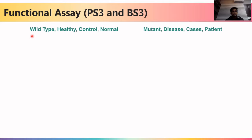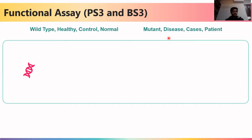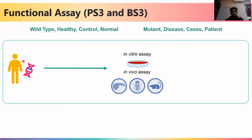Wild type, healthy, control, and normal refer to individuals who are not carriers of the variant and have not been affected by the disorder. Mutant, disease, cases, and patient refer to individuals affected by the disorder. For a gene with a variant hypothesized to cause disease, you can perform multiple types of assays — in vitro assays done in test tubes, or in vivo assays done on model organisms such as mouse, zebrafish, or housefly.